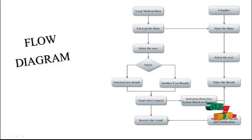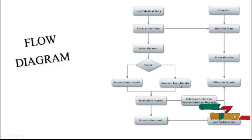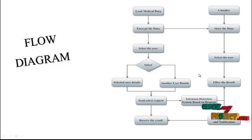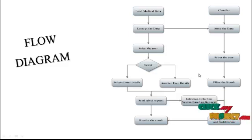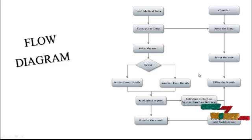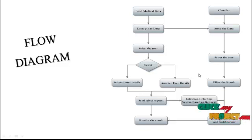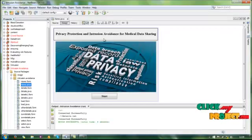The user views the results and notifications. The notifications include cloud load research decisions such as symptoms and treatment based on the user's diseases. Another user's details are sent to the cloudlet, which receives and compares both users' details. The details are checked for similarity or difference, and the cloudlet sends the result back to the user in decrypted form, allowing the user to view symptoms and treatment based on their disease.